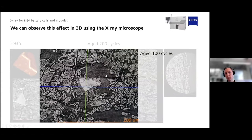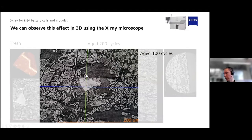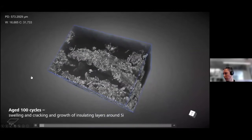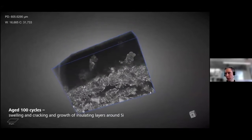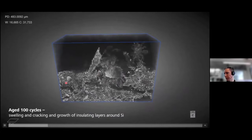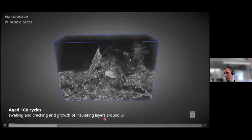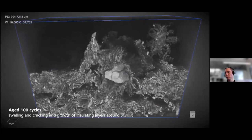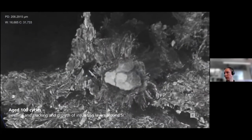Going back to another sample, if you want to know what happened and make an X-ray scan after 100 cycles, you can see what happens with a silicon particle. You can also do something like that using scanning electron microscope, but then you cannot look at the same region of the sample. Here's a short video showing what happened after 100 aging cycles with the silicon — you can see swelling, cracking, and growth of an insulating layer, giving a real understanding of your base materials used for producing battery cells.